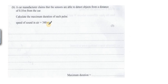Part B: A car manufacturer claims that the sensors are able to detect objects from a distance of 0.1 meters from the car. Find the maximum duration of each pulse. The speed of sound in air is 340 meters per second. It's a pulse and echo problem, and the most important concept is: if you have some device to send the pulse, it will go, hit the object, and then return.